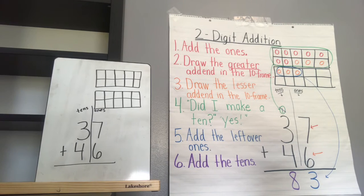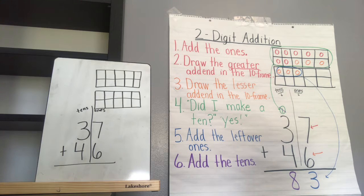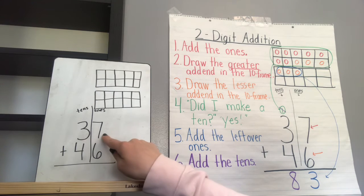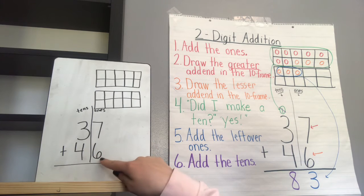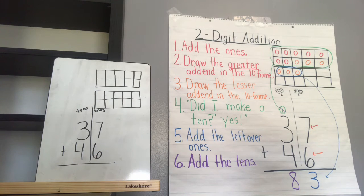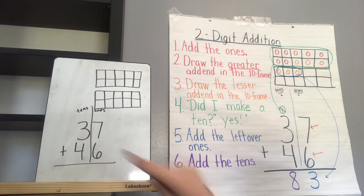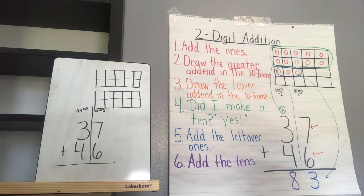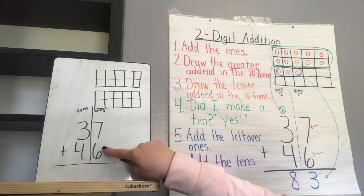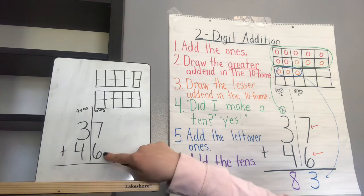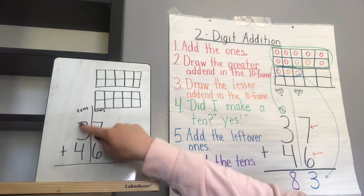How to solve a two-digit addition problem using the 10-frame strategy. The first thing we need to do is read our problem: 37 plus 46. Say it with me — 37 plus 46. And we need to think about our place values. The 7 and the 6 are in the ones place. The 3 and the 4 are in the tens place.